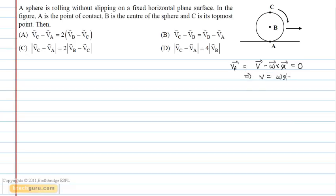The velocity of the topmost point is given by Vc equals V plus omega r. Using the above equation, we get Vc equals 2V.